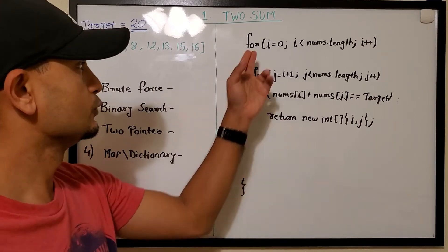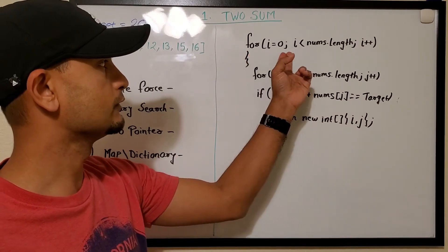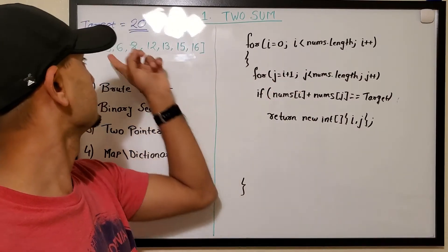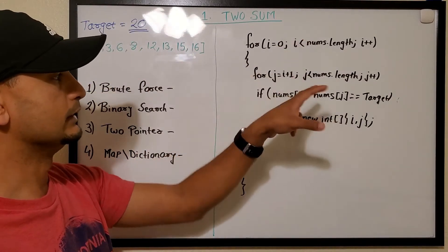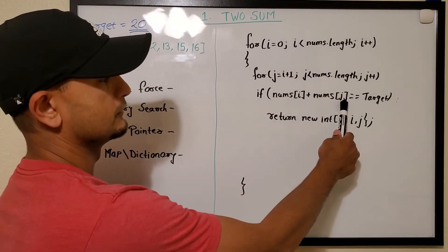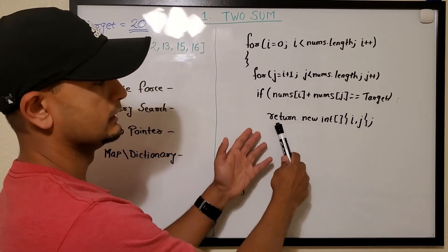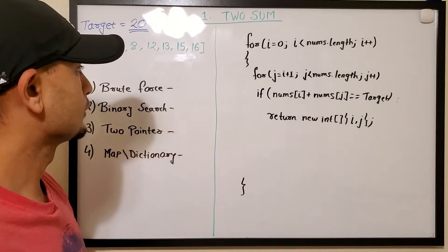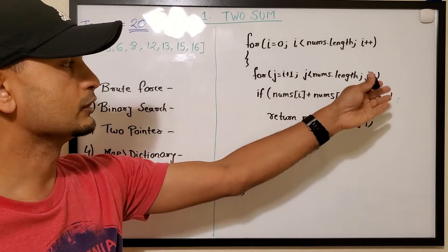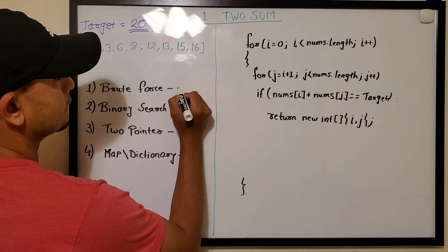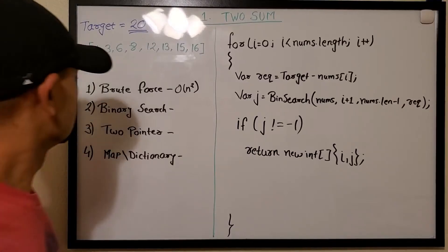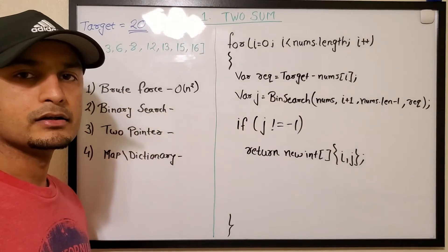The brute force code runs two loops: outer loop i from 0 to nums length, inner loop j from i+1. We add nums[i] plus nums[j], and if it equals target we return those two indices. Since we run two nested loops, the time complexity is O(n²).